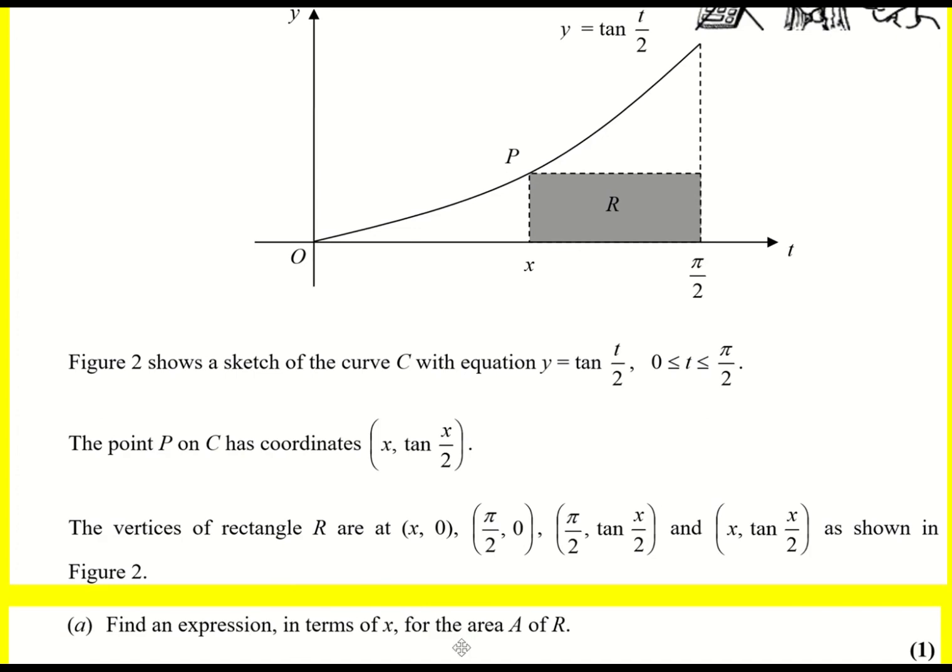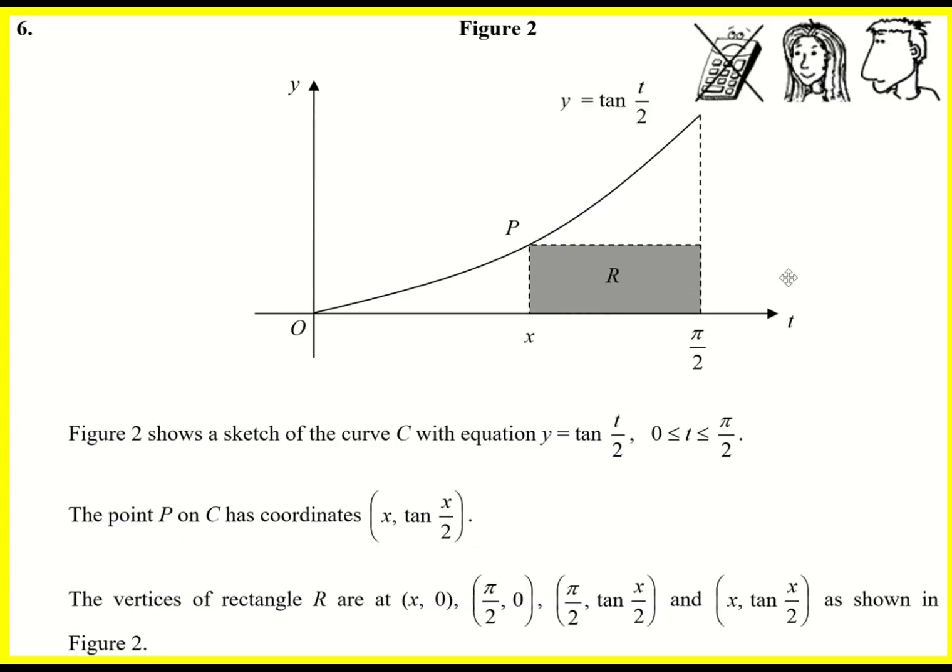We're asked, first of all, to find an expression of the area of R. So for that we can just use base times height. The base will be the difference π over 2 minus x, and the height is then tan x over 2.